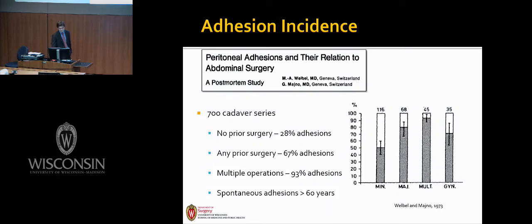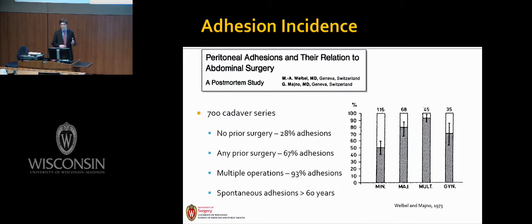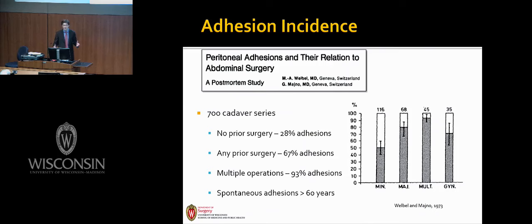After World War II, those numbers significantly changed — in fact, they reversed, perhaps as a result of our exuberance in treating hernias or the increasing incidence of intra-abdominal operations. Adhesive disease is now the most common cause of bowel obstruction, although its actual incidence is a little difficult to assess. In a cadaver study from the 70s, 28% of cadavers with no previous operation had adhesive disease, rising to 67% with any prior surgery, and 93% with multiple operations. Spontaneous adhesions were found to increase with age, likely due to inflammation and infection over the lifetime.